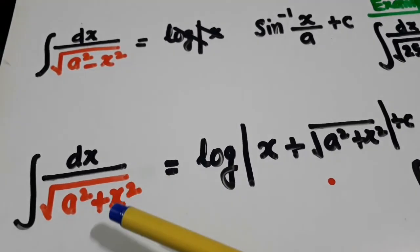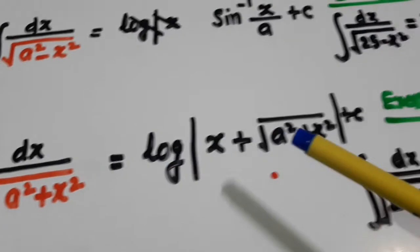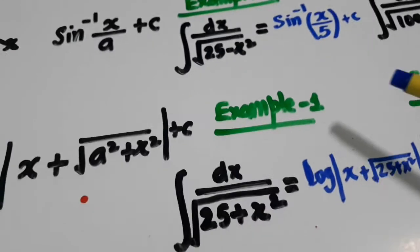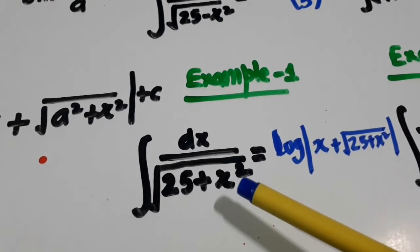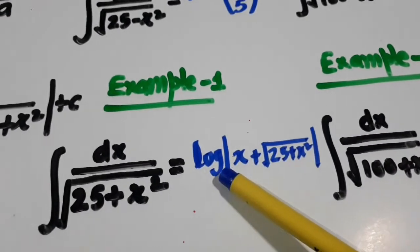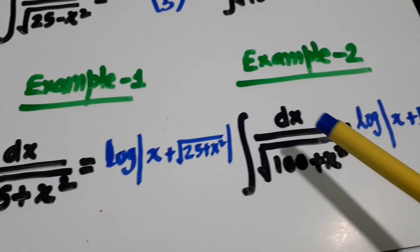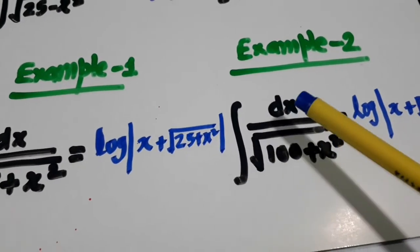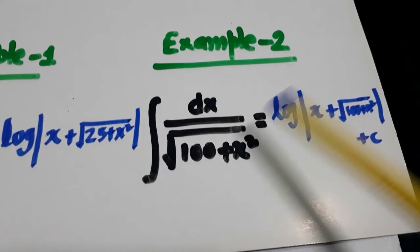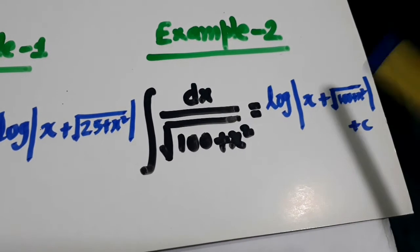For the third type: dx upon under root a square plus x square — here again the answer comes in log. The answer is log of x plus square root of x square plus a square. Let us attempt this: integration of dx upon square root of 25 plus x square — this is log of x plus the expression under the root. Similarly, dx upon under root 100 minus x square, where a is 10, is also in terms of log.